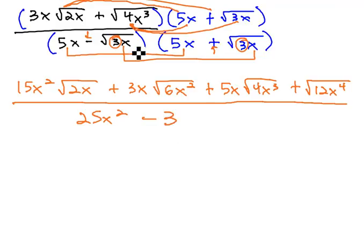Two 3's under a radical pulls a 3 out. Two x's under a radical pulls an x out. No radical left in the denominator. 25x squared minus 3x.